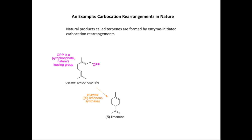We're now going to look at some examples of carbocation rearrangements, starting with rearrangements proposed to take place in nature — in particular, in the synthesis of terpenes. This family of compounds is formed by enzyme-initiated carbocation rearrangement processes. We'll start with a classic example: terpene synthesis from geranyl pyrophosphate. Nature uses geranyl pyrophosphate, which contains a leaving group, and converts it into a number of different organic compounds called terpenes, one of which is limonene.